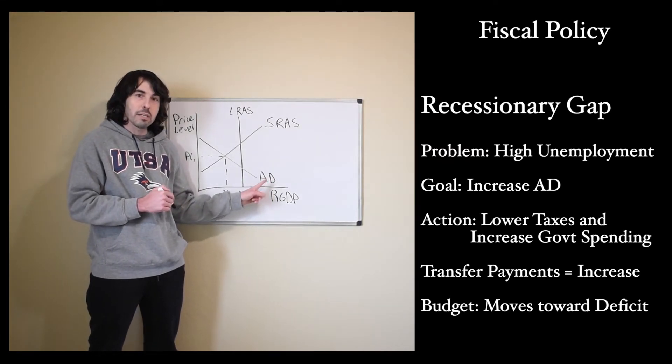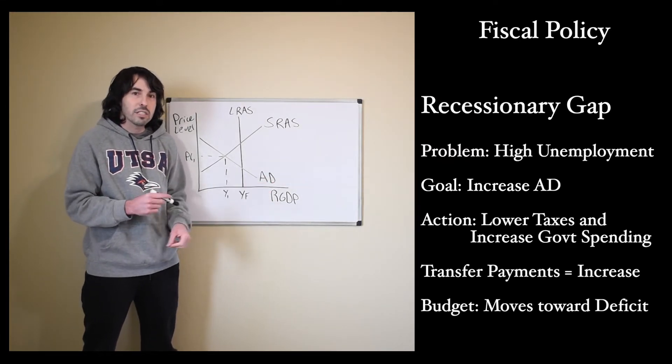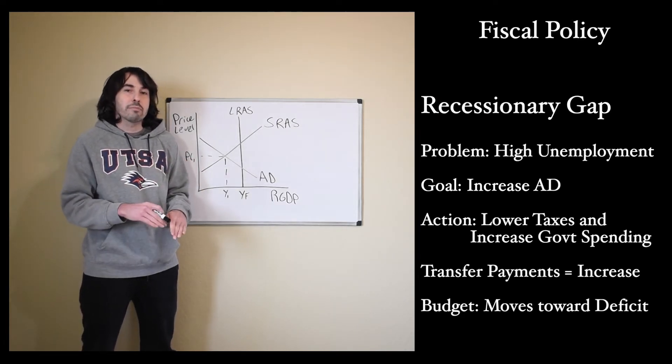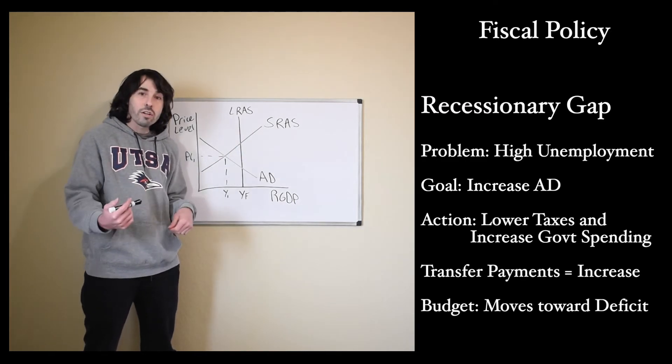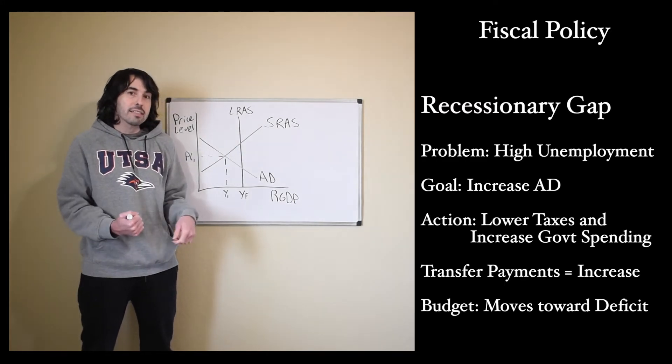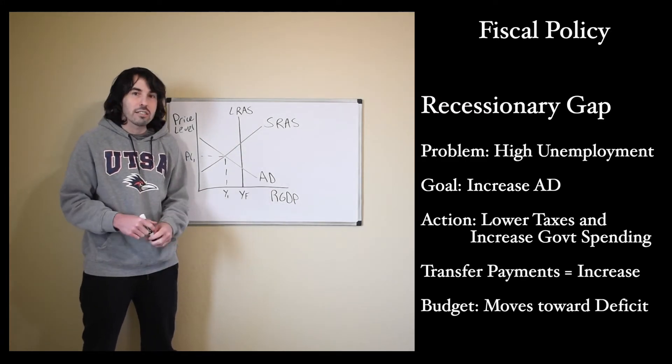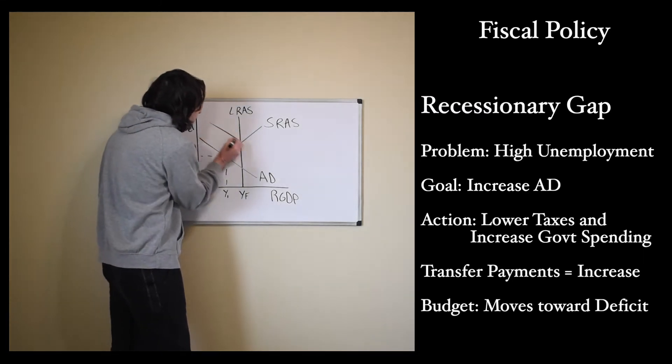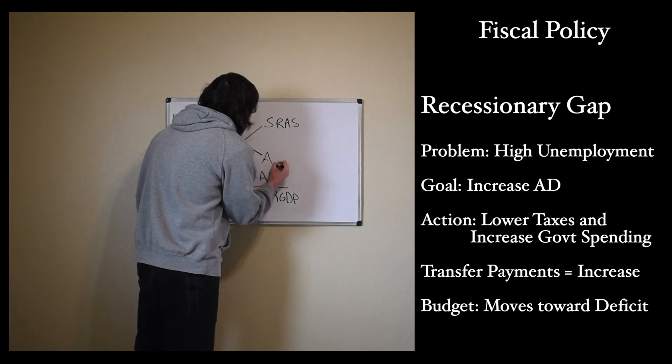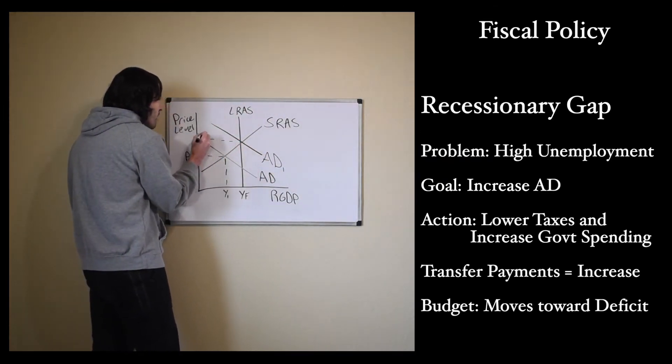Remember, AD, aggregate demand is made up of C, I, G, and X. Consumer spending - if the government cuts personal income taxes, consumer spending will increase, aggregate demand will shift to the right. Or the government could increase government spending, because that's the G out of our aggregate demand. Either one of those, or a combination of the two, either lower taxes or increasing government spending is going to cause aggregate demand to shift to the right.